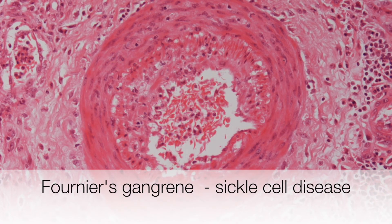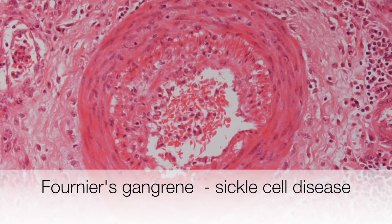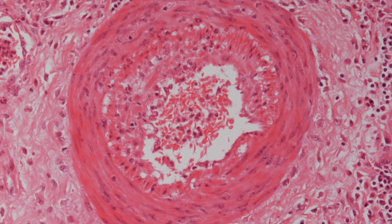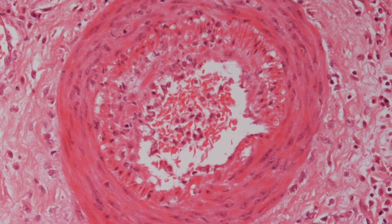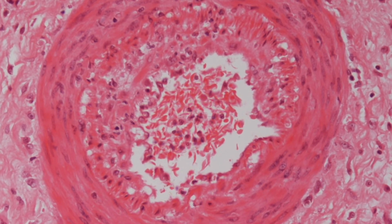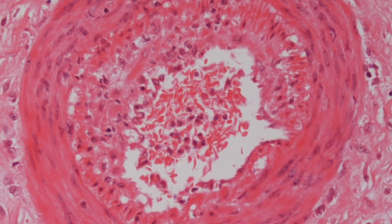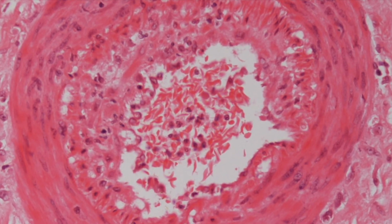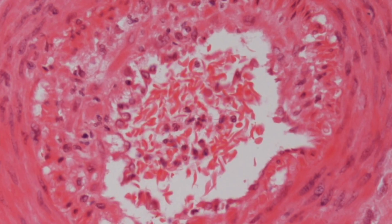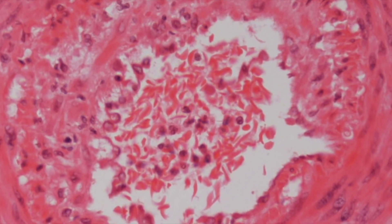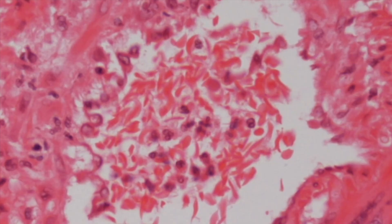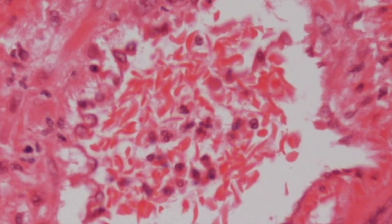This is an interesting image from a patient with Fournier's gangrene. This is an artery and as we zoom into the centre of the artery you can see that the red blood cells are sickled. This is a patient with sickle cell disease that in this particular case has contributed to the development of Fournier's gangrene.